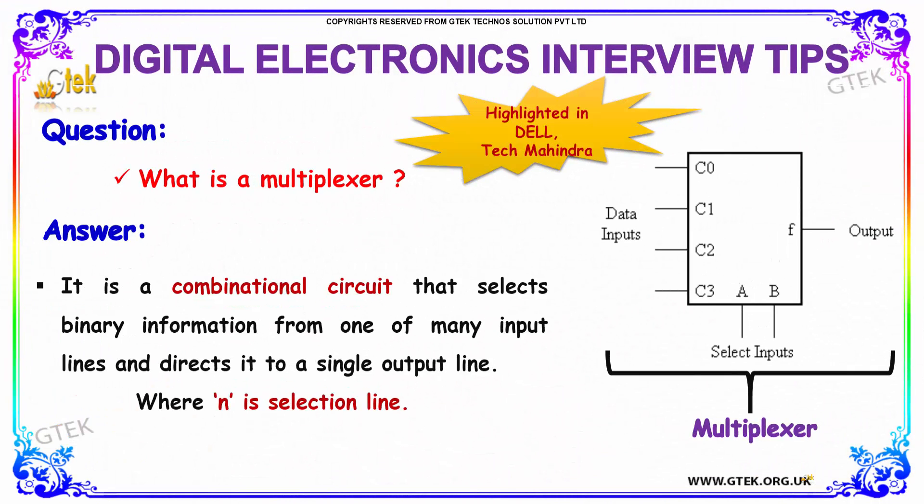The next question is: what is meant by a multiplexer? A multiplexer is a combinational circuit that selects binary information from one of many input lines and directs it to a single output line, where N is considered to be the selection line.